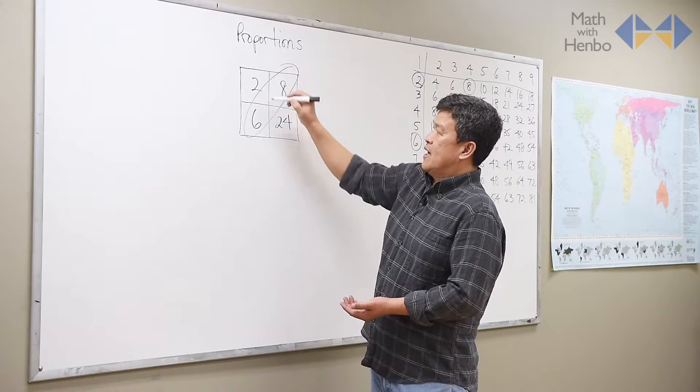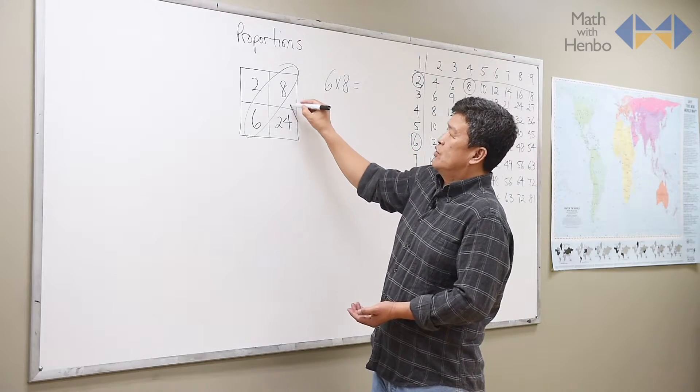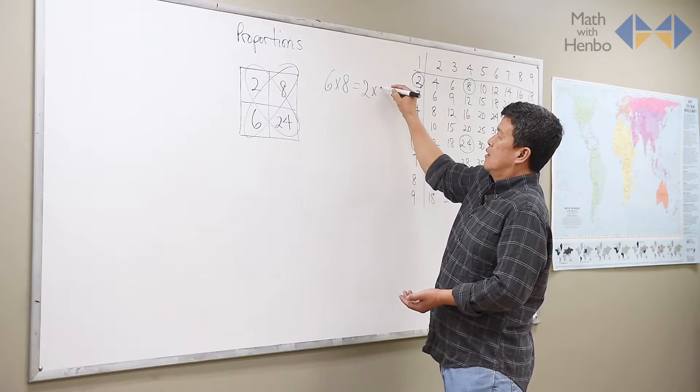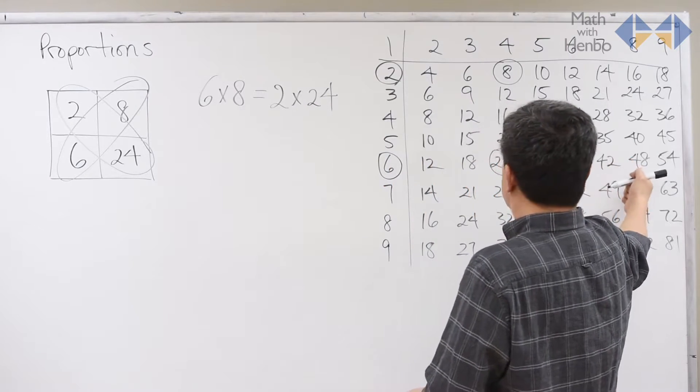When you cross-multiply, for example, 6 times 8, it should equal 2 times 24. So 6 times 8, as you see, here is 48.